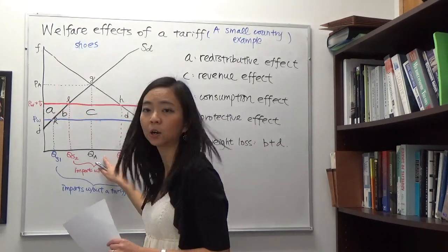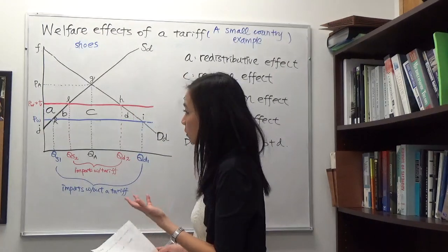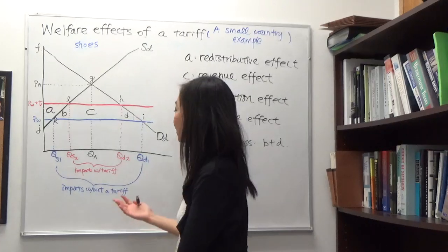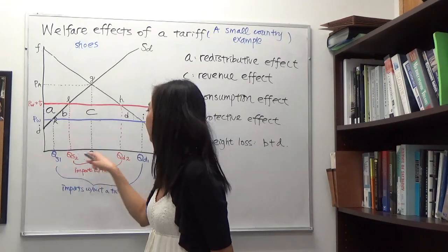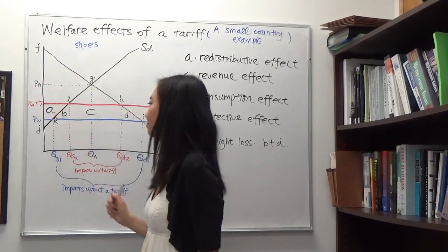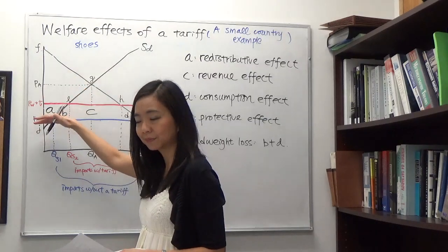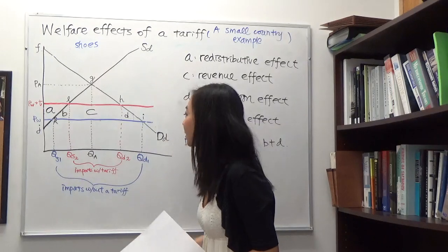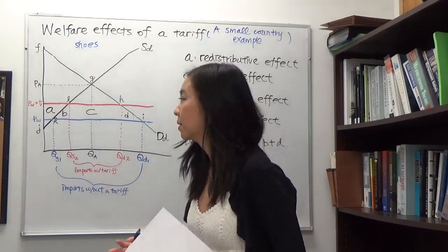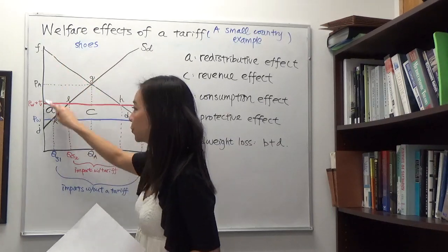We can look at the welfare of consumers by examining consumer surplus, which is the area below the demand curve, above the price paid by the consumer. The base of the triangle runs from zero to the quantity demanded, QA. So consumer surplus is triangle FG-PA. Producer surplus is the area below the price received by the producer, above the supply curve, with the base from zero to QA. Producer surplus under autarky is triangle PA-G-J.